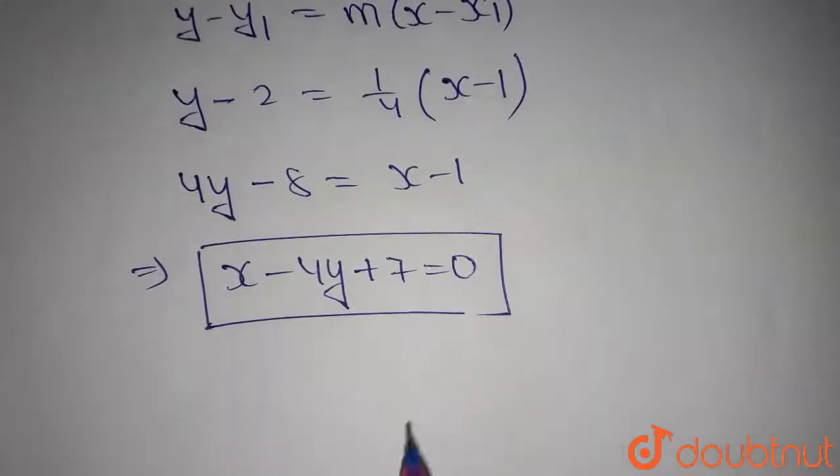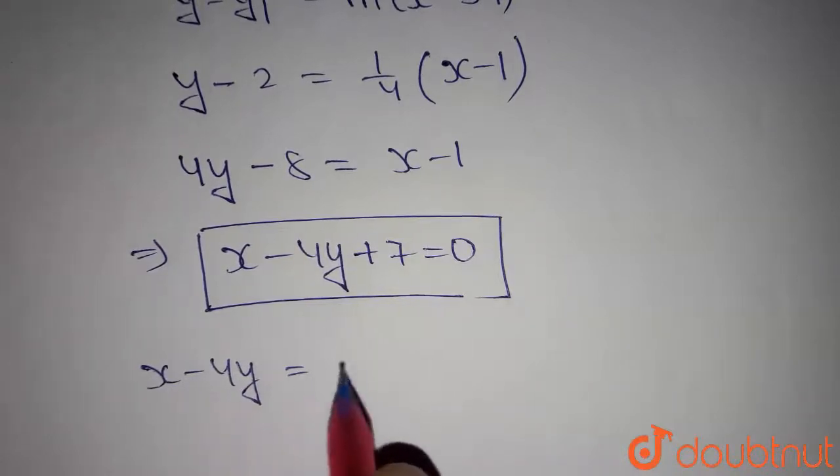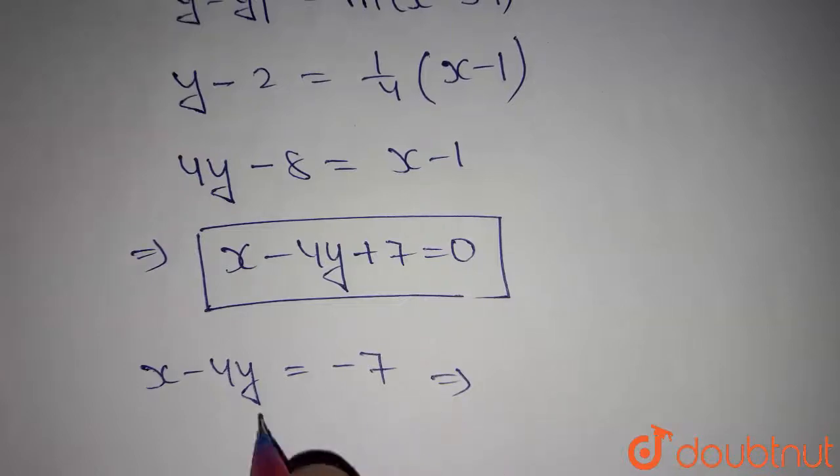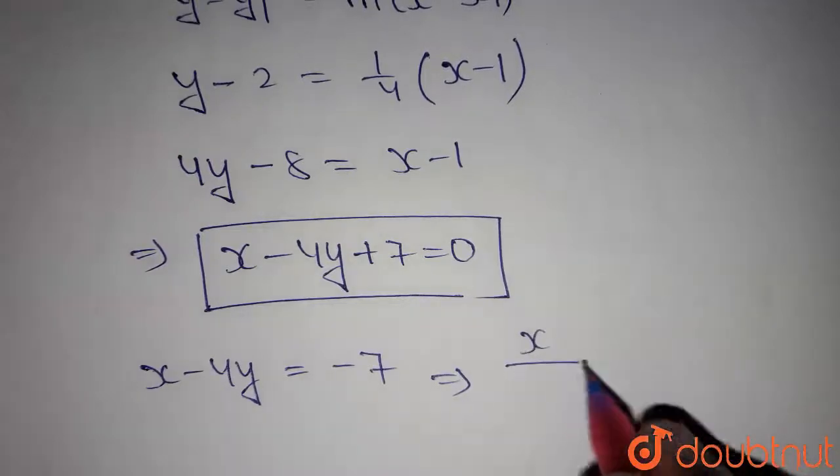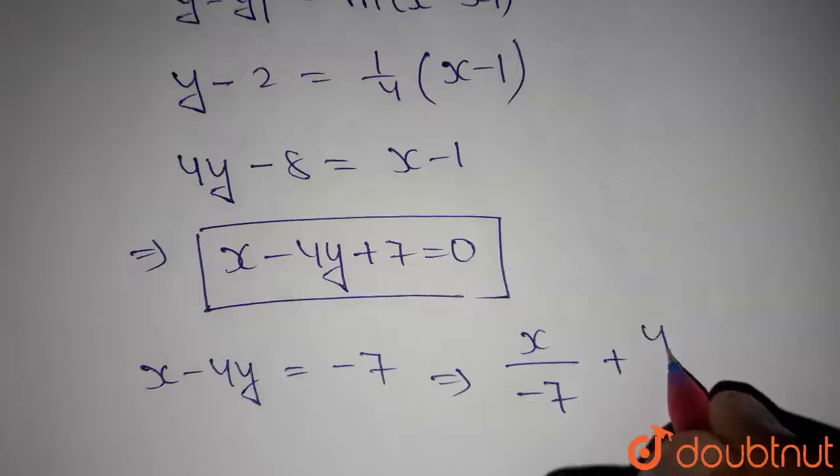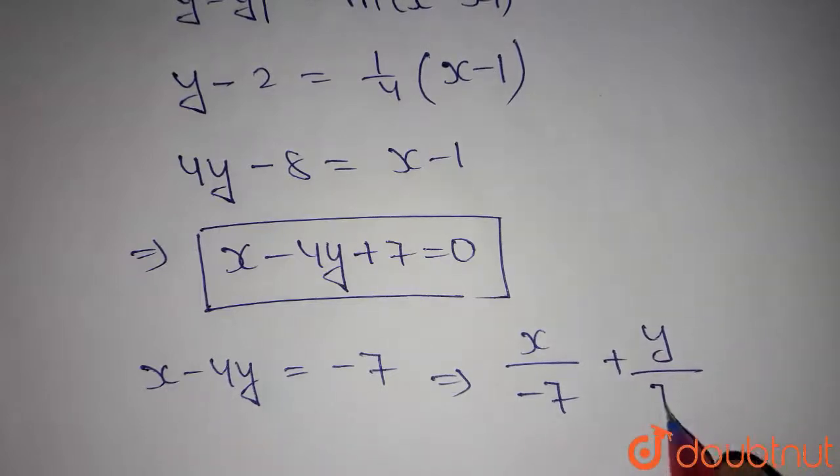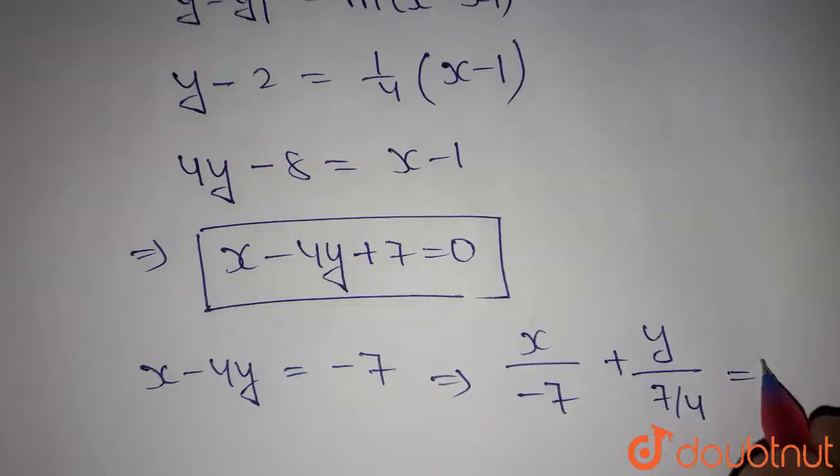Now, let's convert this into intercept form. We get x minus 4y is equals to minus 7. Divide both sides by minus 7. So, we get x by minus 7 plus y by minus 7 by minus 4 which gives 7 by 4 is equals to 1.